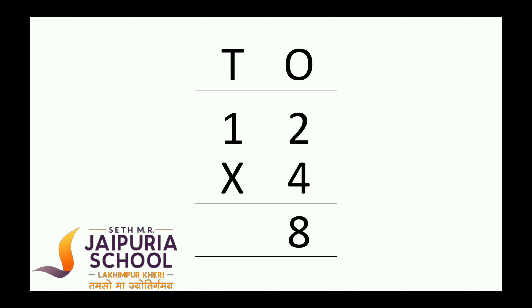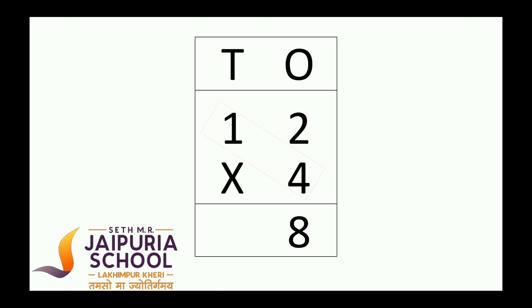Now, multiply the digit in the tens place with the multiplier 4. So, 1 × 4 is equal to 4 tens. So, we found the answer 48.